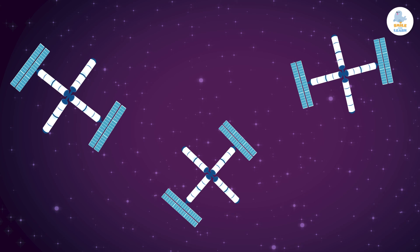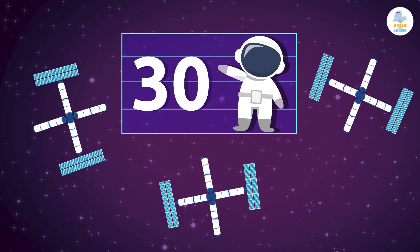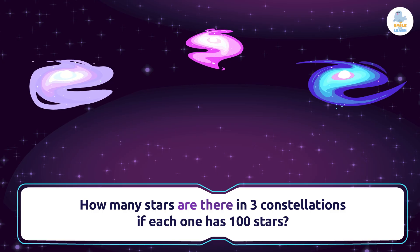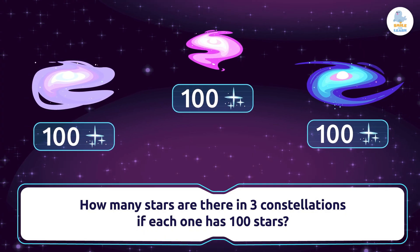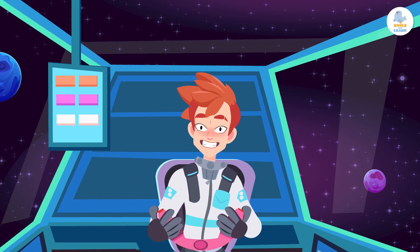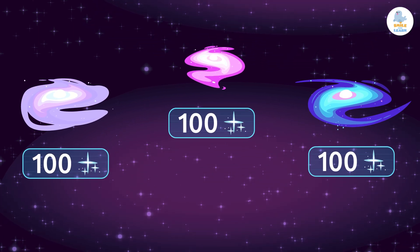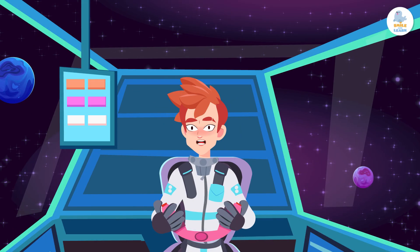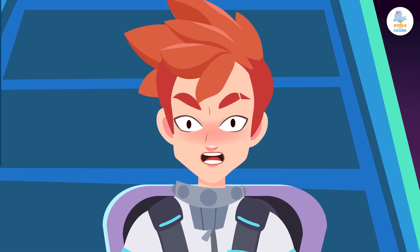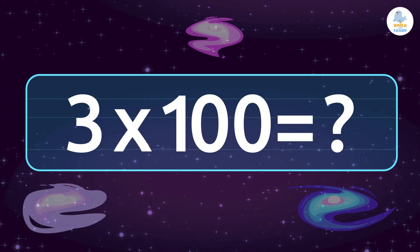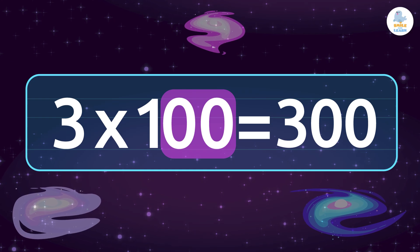That means if we have three space stations with ten astronauts living in each one, there are 30 astronauts in total. How many stars are there in three constellations if each one has 100 stars? Do you dare multiply by 100? We can multiply the traditional way, but we want to do it faster. So first we write the number three and then we simply add two zeros from the number 100. There are 300 stars.